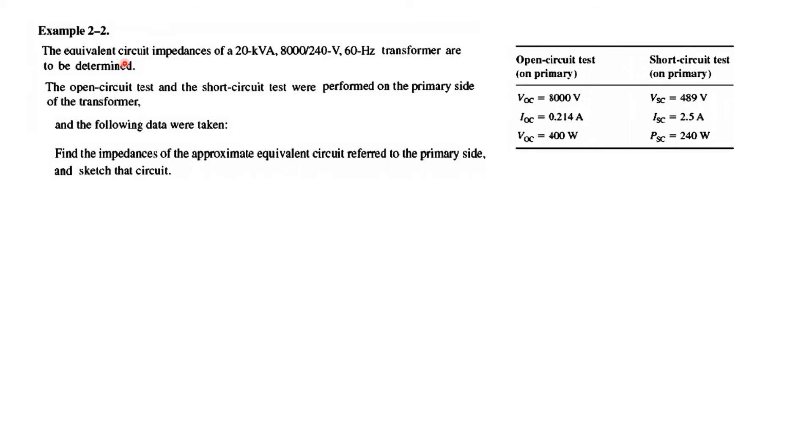Here is an example. The equivalent circuit impedance of a 20 kVA, 8000 by 240 volt, 60 hertz transformer are to be determined. The open circuit test and the short circuit test were performed on the primary side of the transformer. And the following data were taken. So these were the results for the open circuit and short circuit test. Find the impedance of the approximate equivalent circuit. Keep in mind, we have to use the approximate model. Refer to the primary side and sketch the circuit or find the value of the components actually. So this model we'll be using, this is referred to the primary side. And this is the simplified or approximation equivalent model.